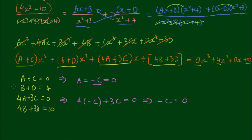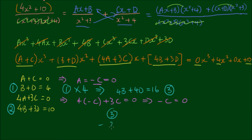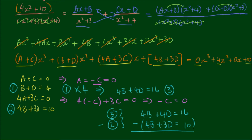To find b and d: label b + d = 4 as equation 1, and 4b + 3d = 10 as equation 2. Multiplying equation 1 by 4 gives 4b + 4d = 16 (equation 3). Subtracting equation 2 from equation 3: 4b − 4b = 0, 4d − 3d = d, and 16 − 10 = 6, so d = 6. From equation 1, b + 6 = 4, so b = −2.